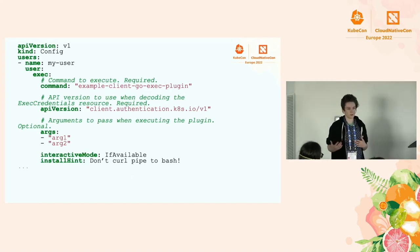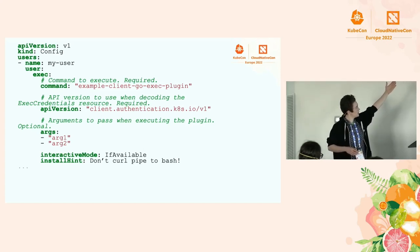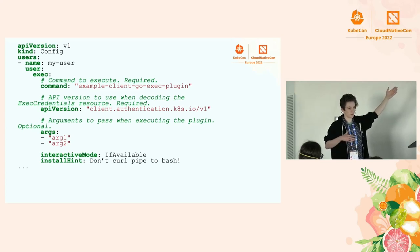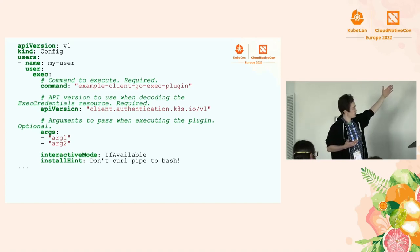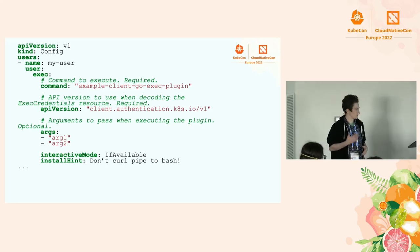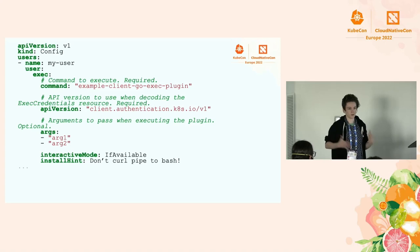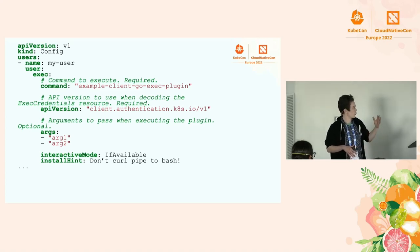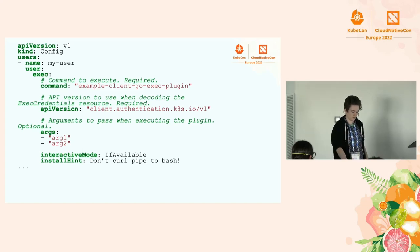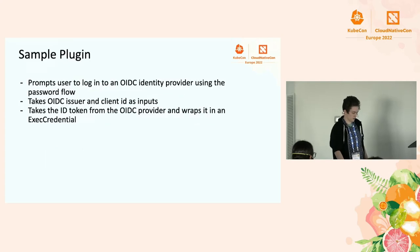Typically, the user has a kubeconfig with an exec field that specifies: a path to a binary on the machine, an API version, arguments passed to the command, whether interactive mode is needed (i.e., whether a TTY is required when kubectl is invoked), and an install hint — a helper message telling the user where to install the binary if it's not found in their path.